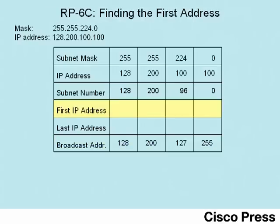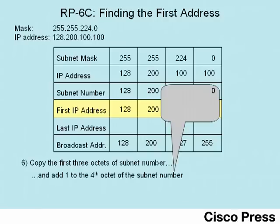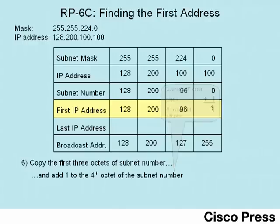For completeness, here is the simple math to find the first and last IP addresses in the range of valid addresses. Step 6 says to find the first IP address: copy the first three octets of the subnet number — regardless of where the rectangle is — then add 1 to the fourth octet. So 0 plus 1 is 1, giving us a first valid IP address of 128.200.96.1.